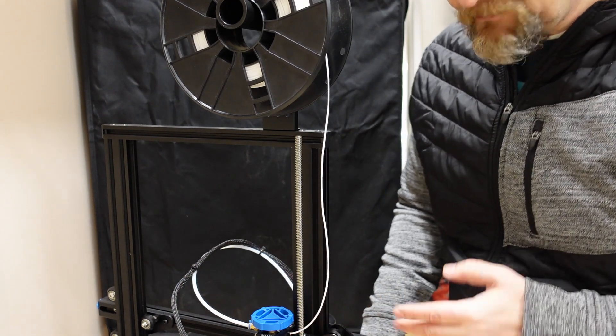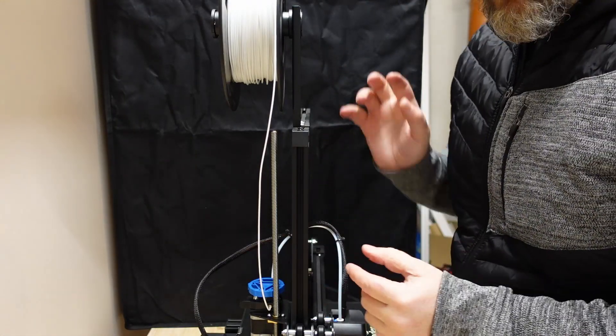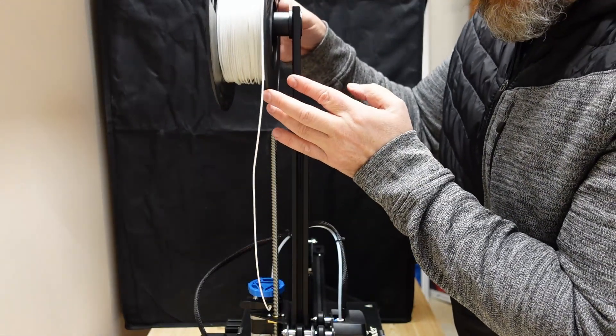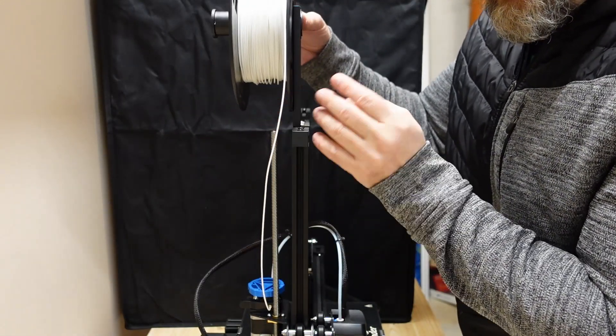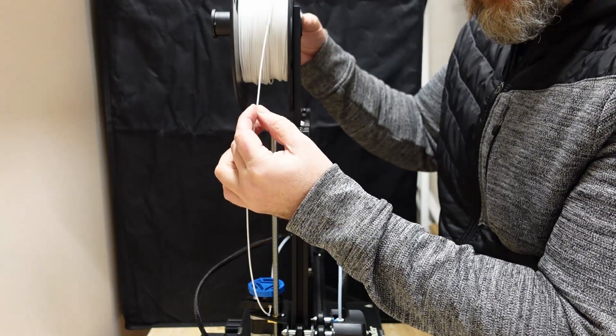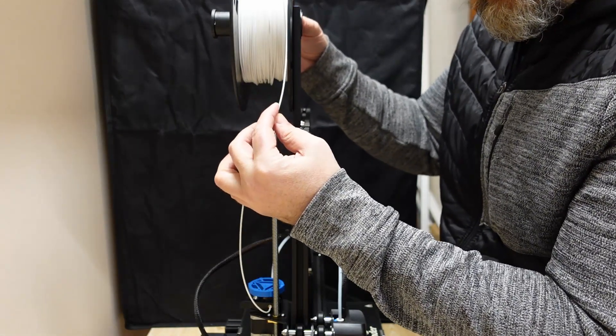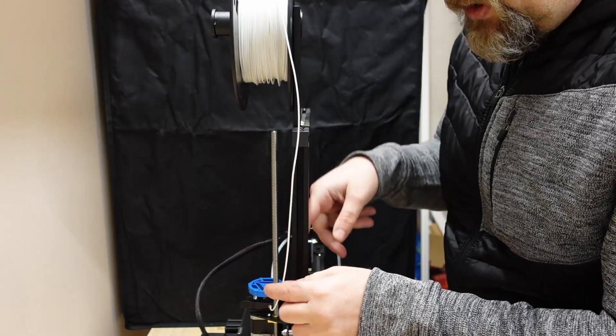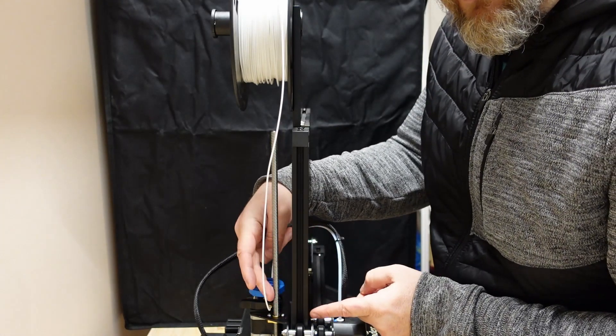And another problem with this base setup is depending on the position of this spool, if this is on this edge here and the filament position, unrolled filament is on this side, so it will be very close to the Z axis screw.